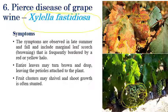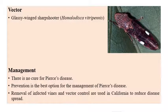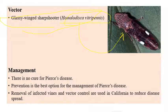In later stages, the entire leaf turns brown and drooping or dropping of leaves can be clearly seen. Pierce's disease of grapevine is transmitted by the insect vector glassy-winged sharpshooter, Homalodisca vitripennis (previously called Homalodisca coagulata). For management, there is no cure for Pierce's disease. Prevention is better than cure — remove all infected vines. Spraying insecticides for vector control may help but is not fully effective, especially for grapes.